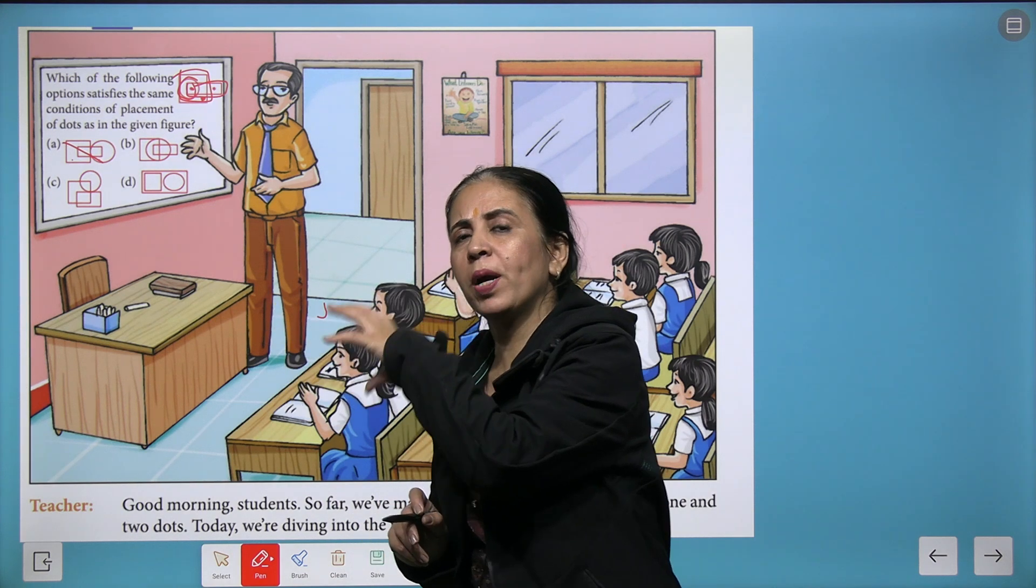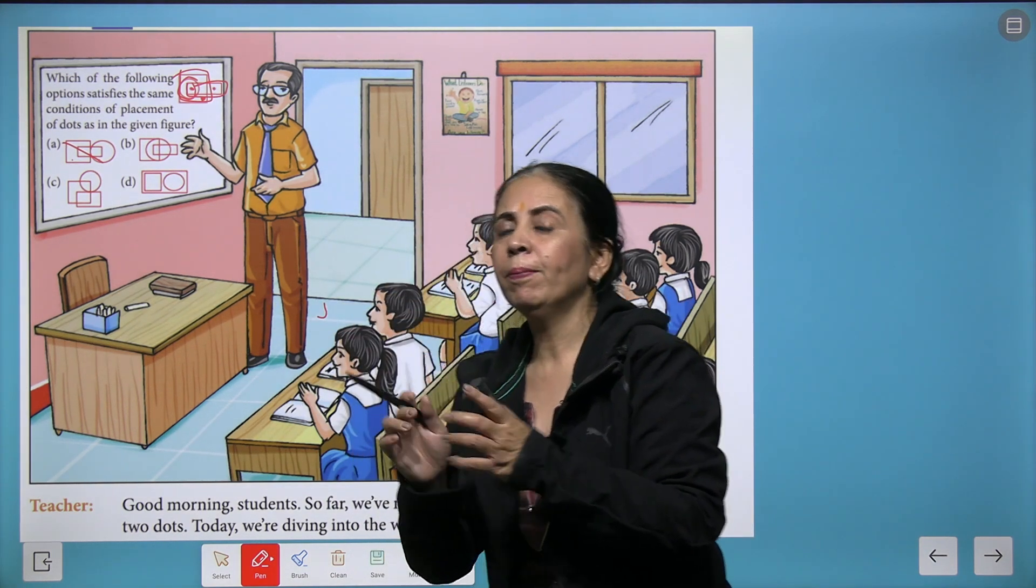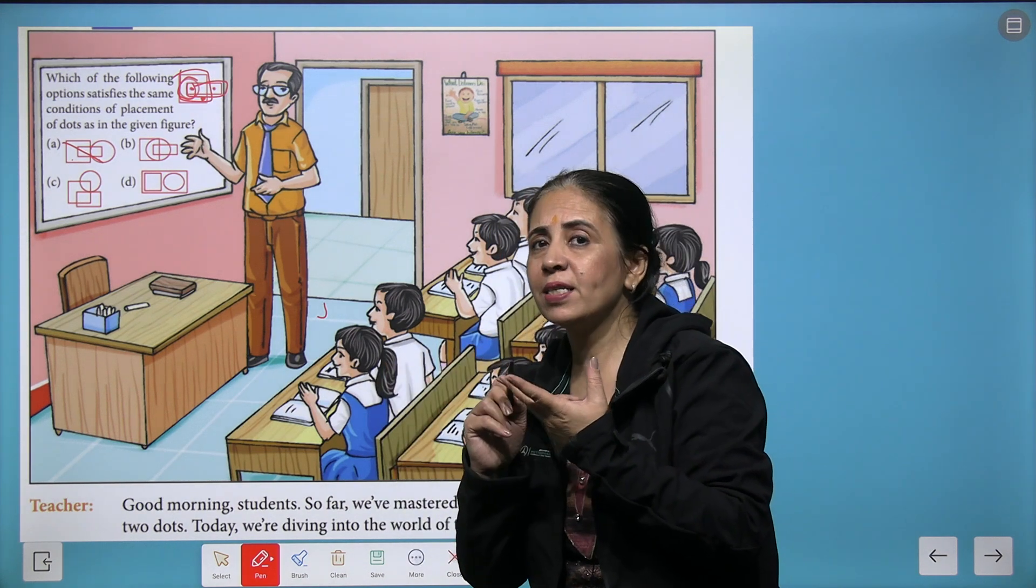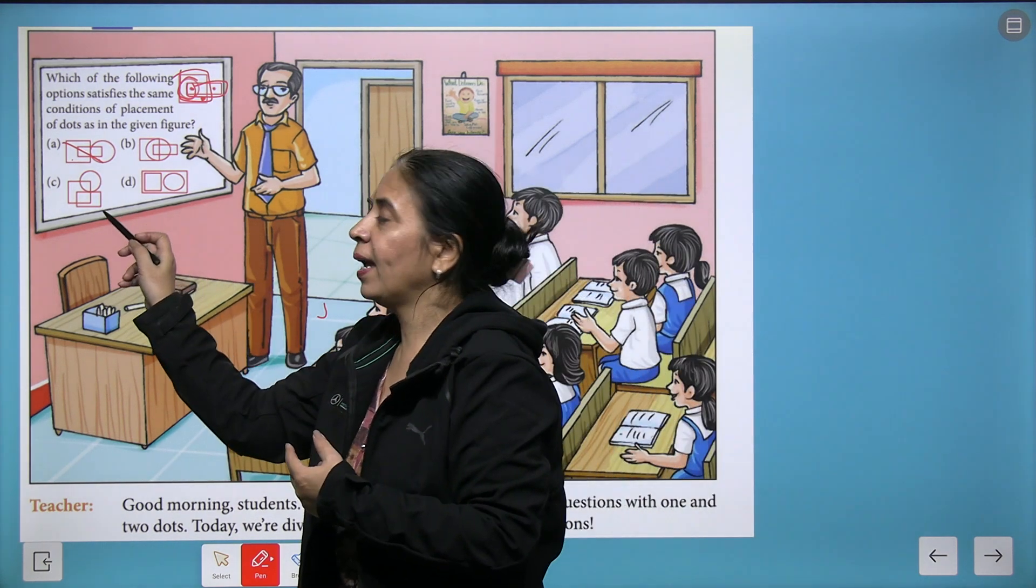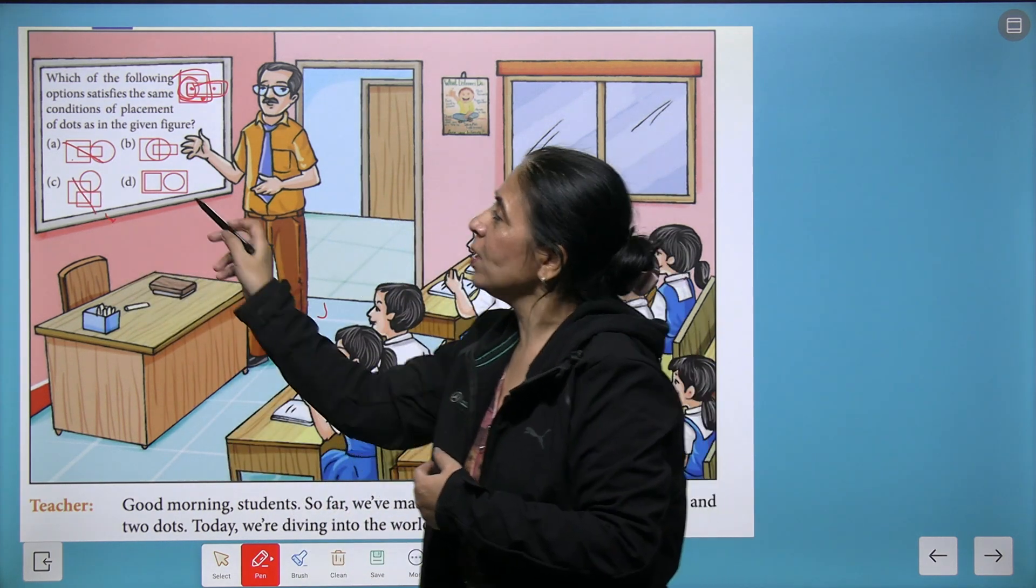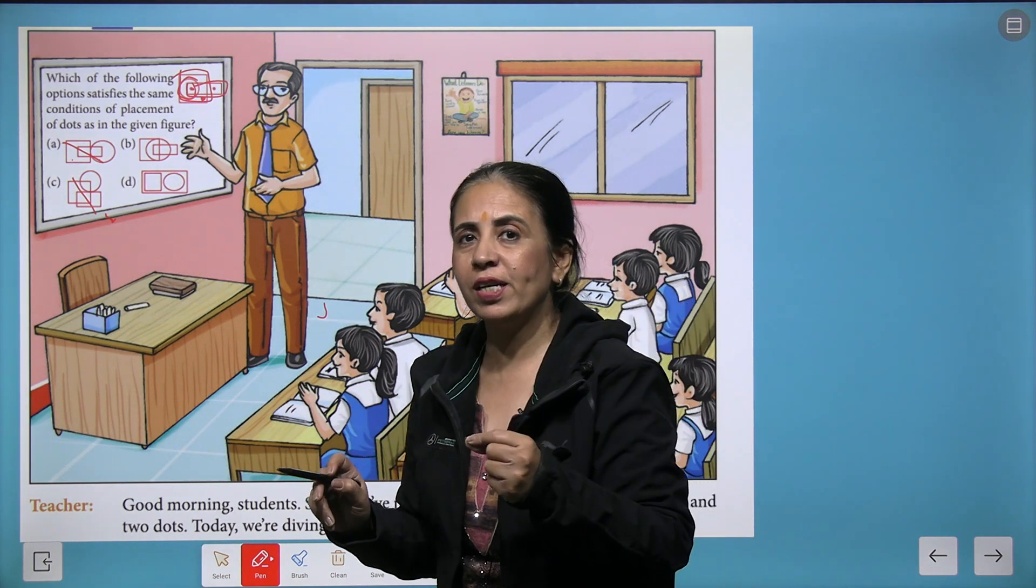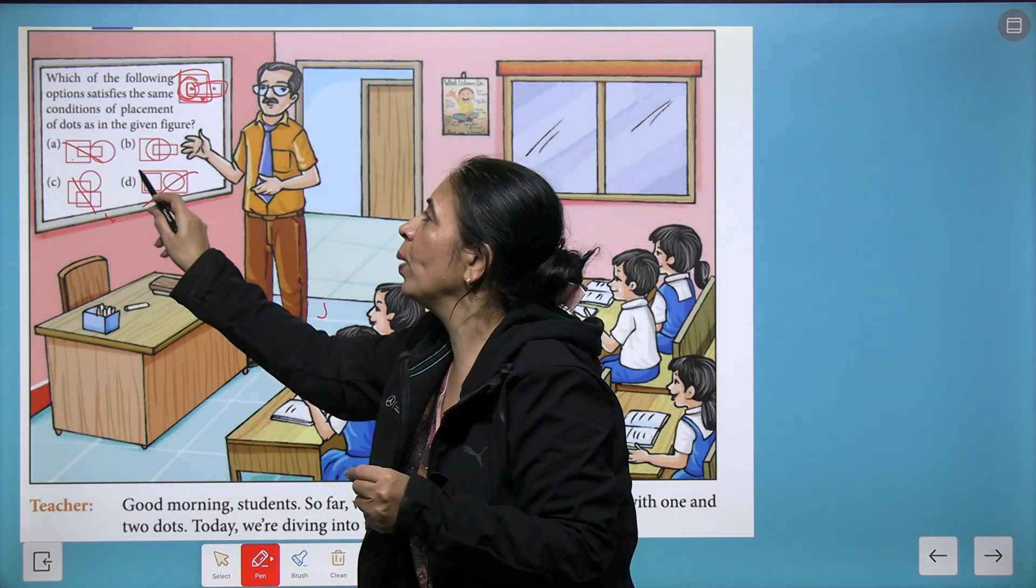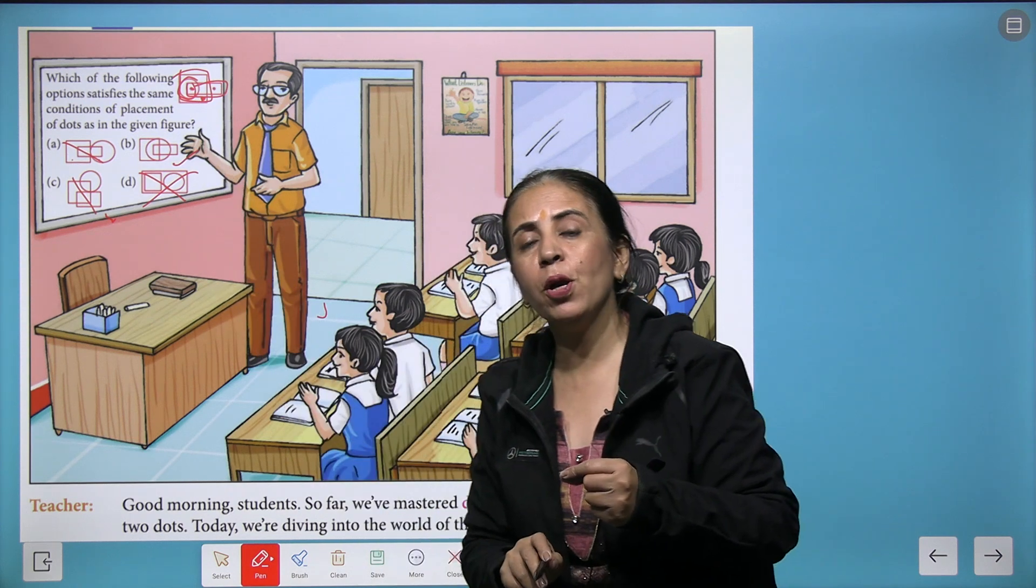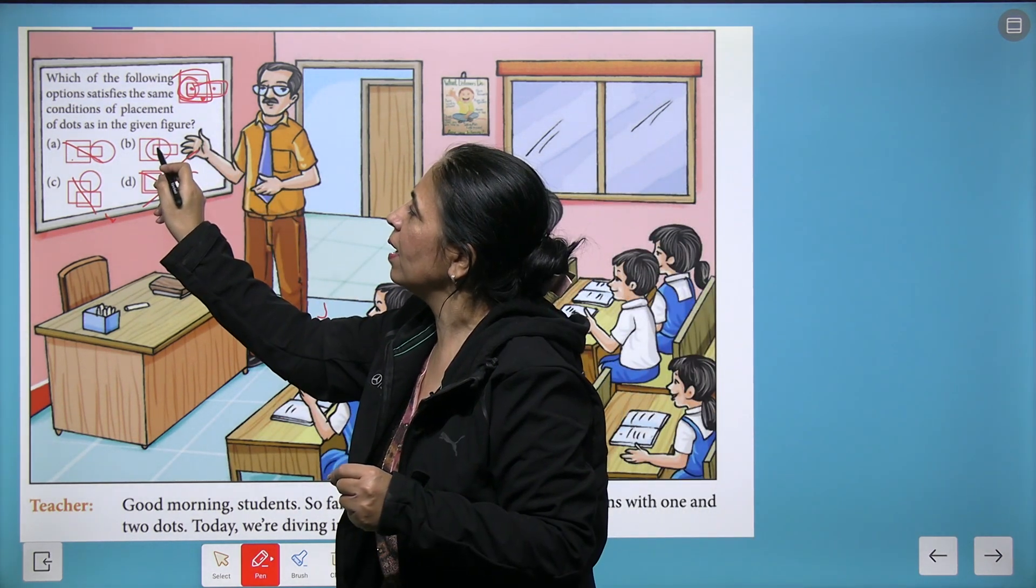The common area of square, rectangle, and triangle - again, a big no, so we cross it. Coming to this figure, again we don't have a common part of intersection, so we are left with only option B.